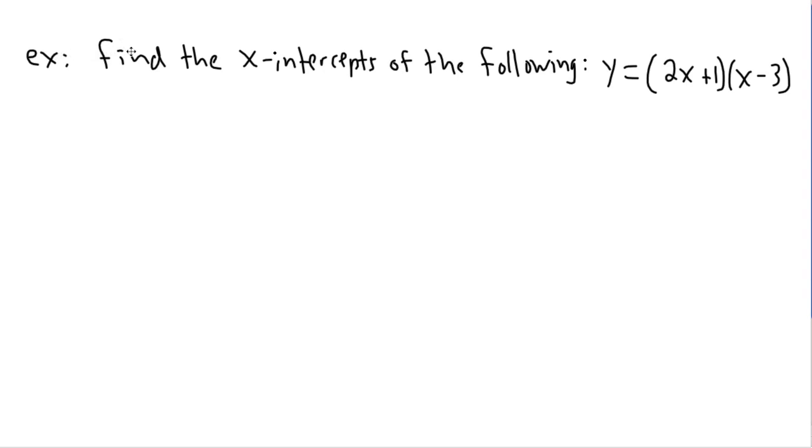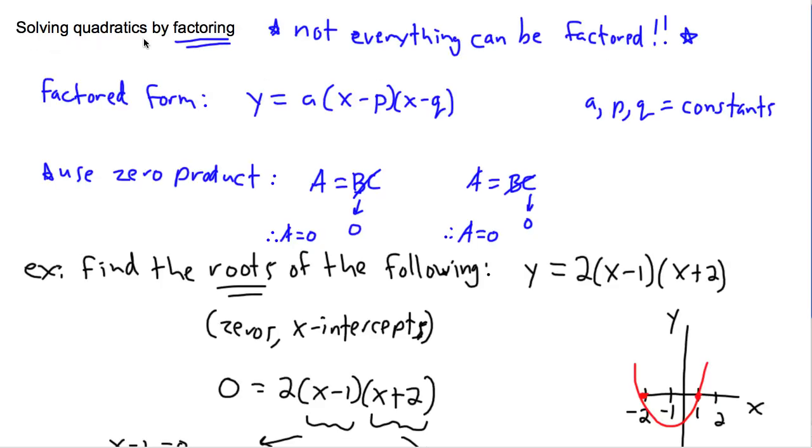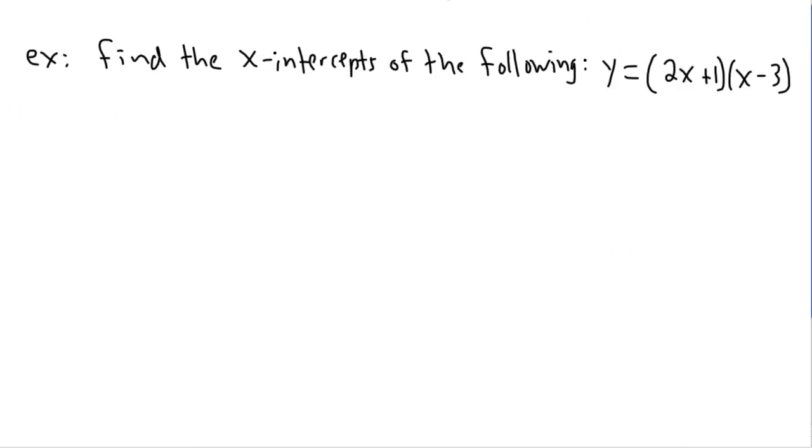Let's take a look at another example of finding the x-intercepts, or the roots, of a quadratic equation. It's already given in factored form. If you remember what we just did, we were looking at if it is given in factored form, you can just use a zero product idea that if I can make one of the things equal to zero, then everything equals zero, and that means we can solve it.